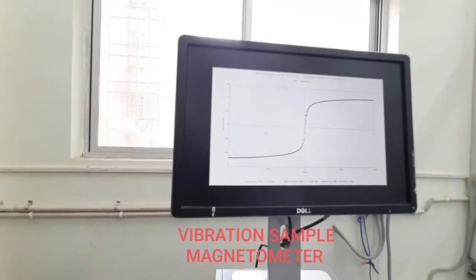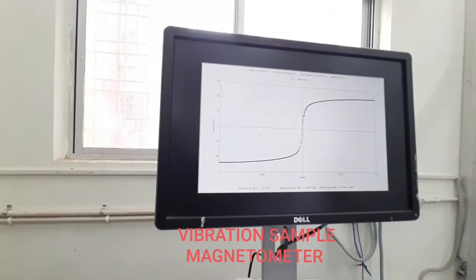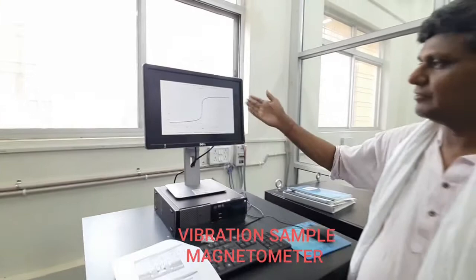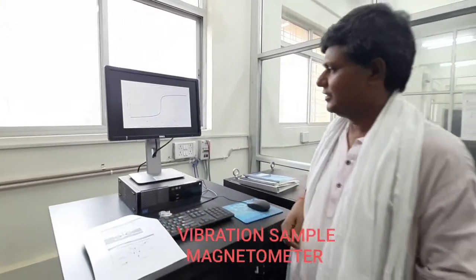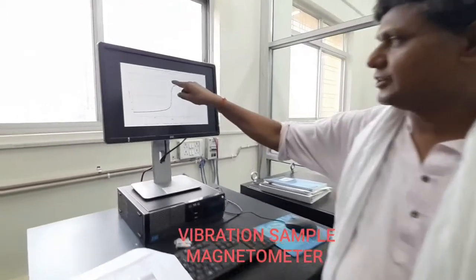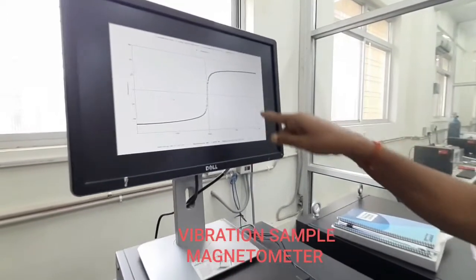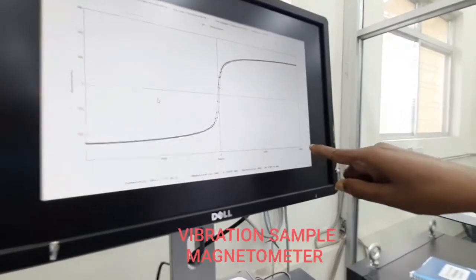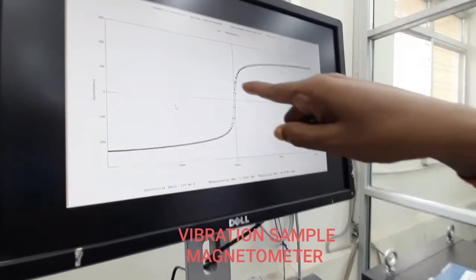This is the magnetic material sample magnetization curve. We can see here this is the saturation magnetization of the material when the maximum value of applied field is 20,000 gauss, and these are the...